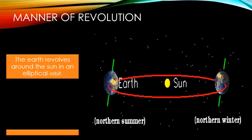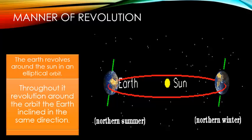The earth revolves around the sun in an elliptical orbit. Throughout its revolution around the orbit, the earth is inclined in the same direction. Types of seasons: Summer, Winter, Spring, and Autumn.